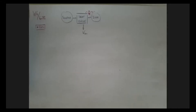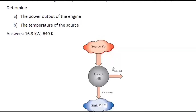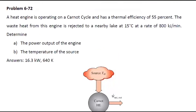Let's have a quick look at the question. We have a Carnot heat engine with a thermal efficiency of 55%. The waste heat from the engine is rejected to a nearby lake at 15 degrees Celsius at a rate of 800 kJ per minute. We are to determine the power output of the engine and the temperature of the source.